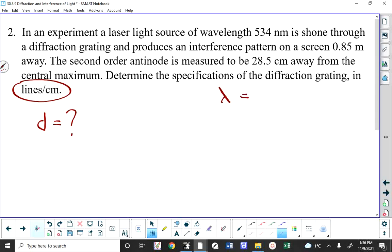Then we can flip it over and figure out how many lines per centimeter. What is it we know? Lambda equals 5.34 times 10 to the negative 7 meters. X is how far away the part of the pattern is from the central maximum. L is how far away from the diffraction grating the screen is, which is 0.85 meters, and N is 2 because it says the second-order antinode.